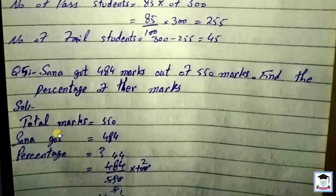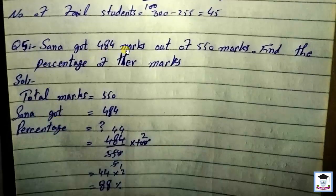Question number 5: Sana got 484 marks out of 550 marks. Find the percentage of her marks. Total marks: 550, Sana got: 484.